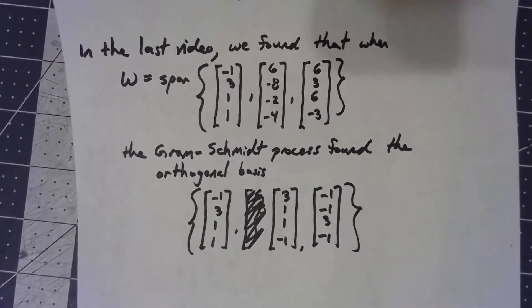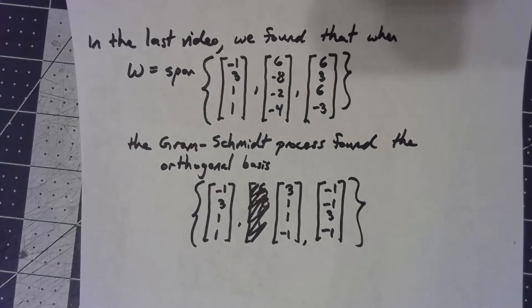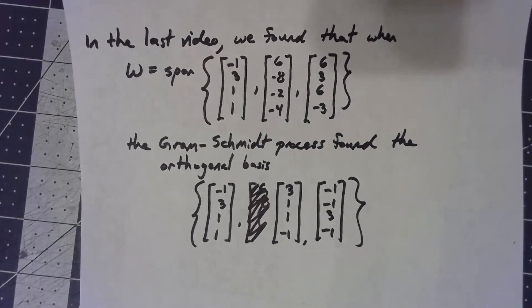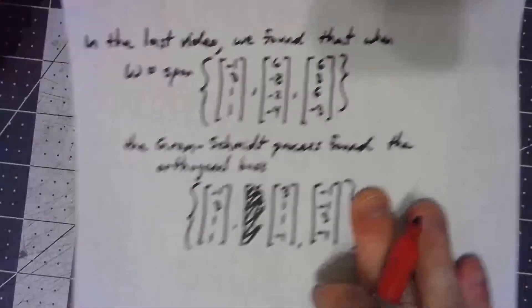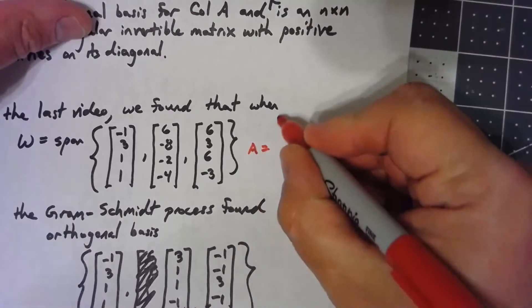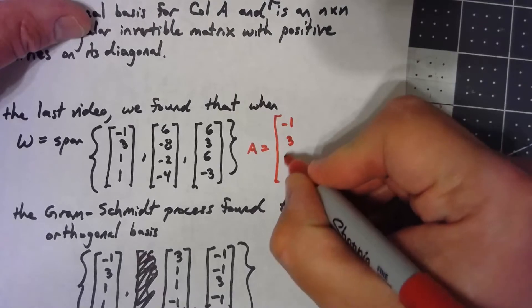In the last video, we found out that if we started with the span of these three vectors, the Gram-Schmidt process found an orthogonal basis that I've got below. In terms of this QR factorization, we're going to say that A is the matrix that has these things as the columns.